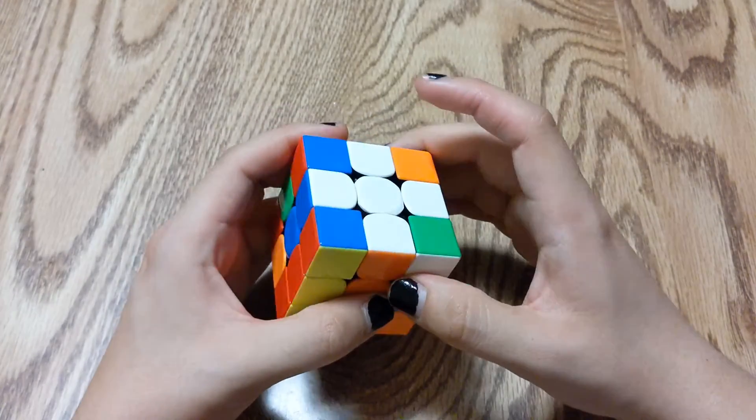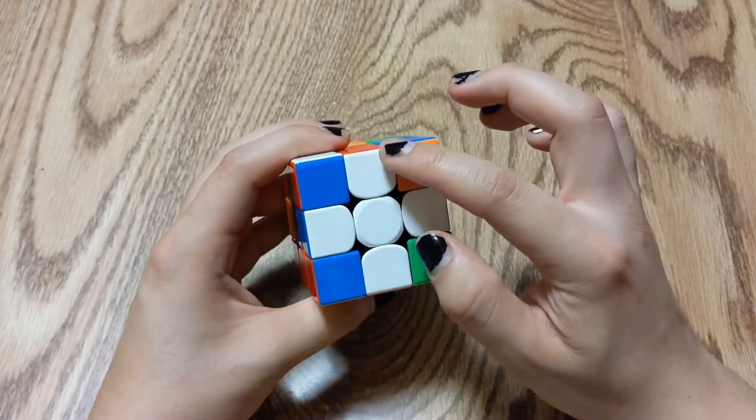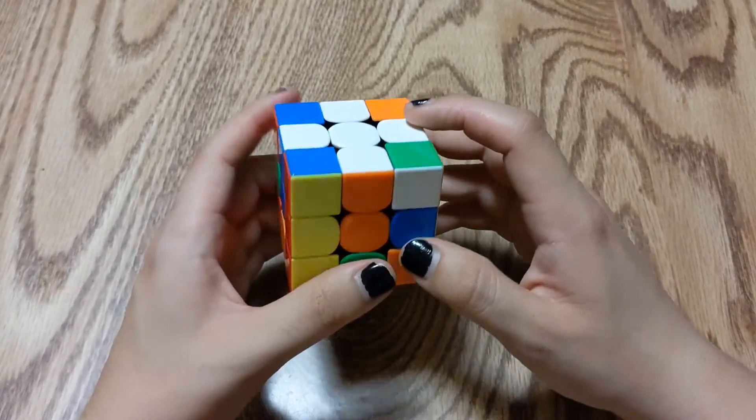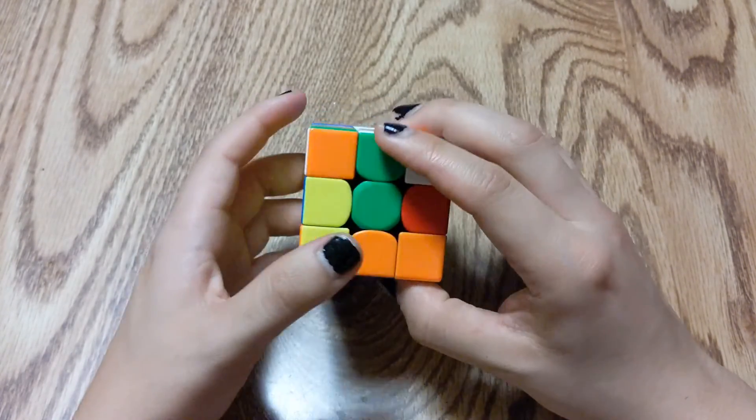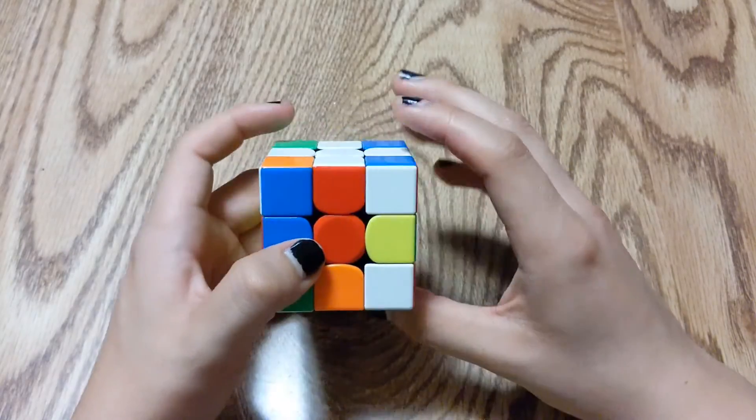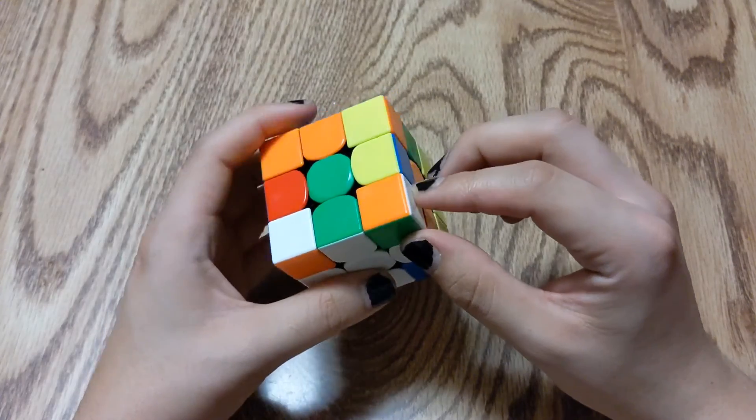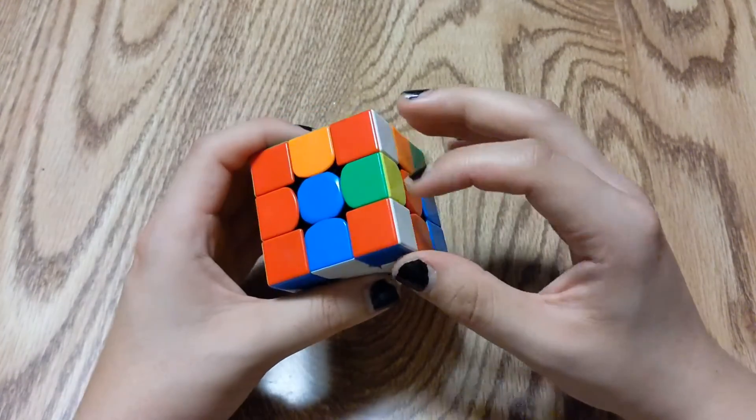When you turn the cube over, you'll notice that you now have white cross with the proper color scheme. And now you can go on to building the first layer.